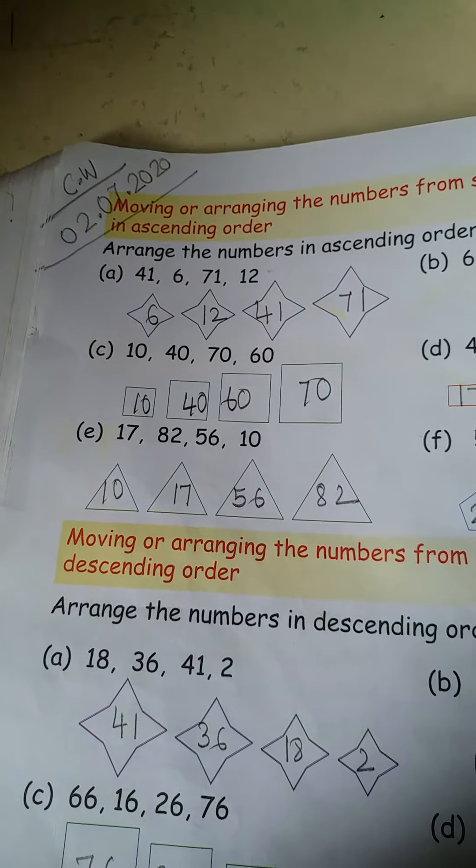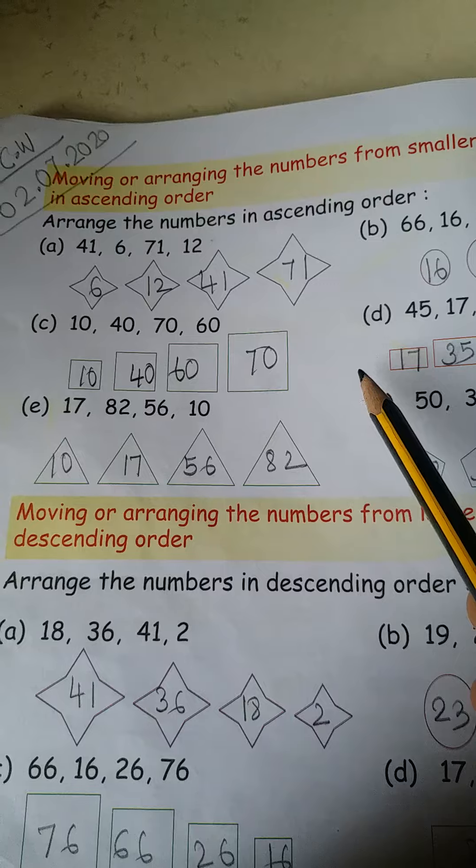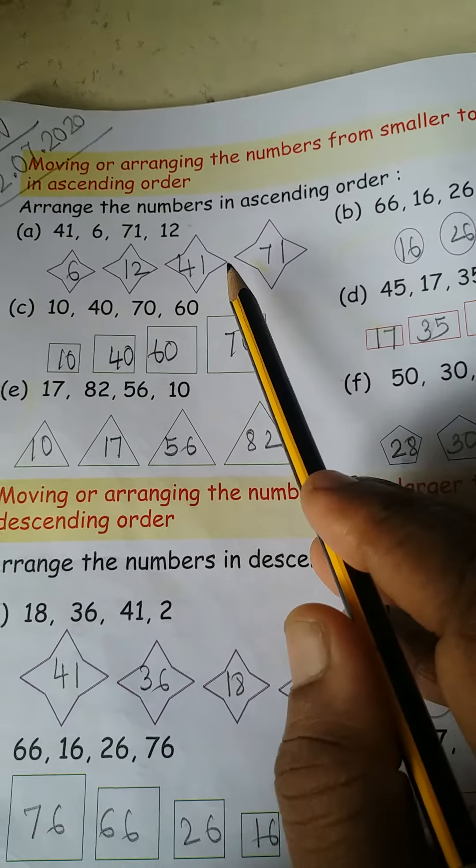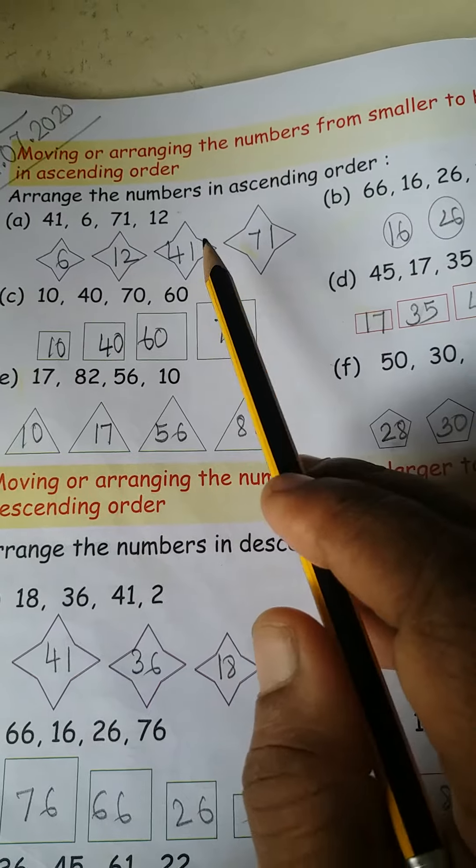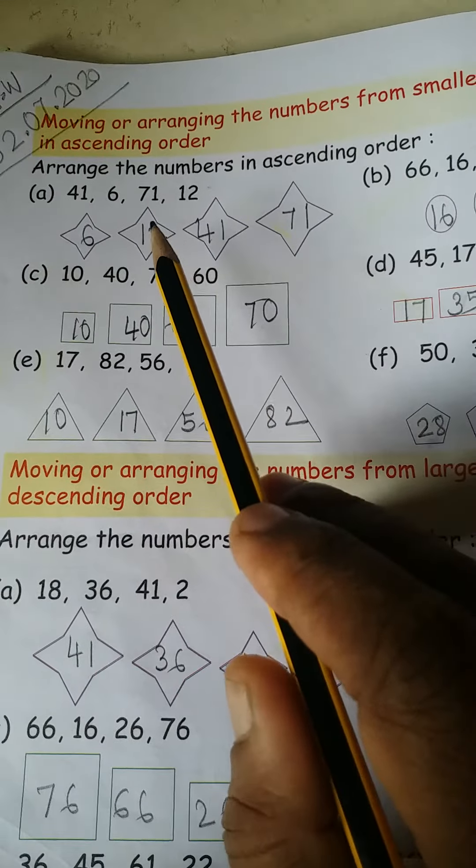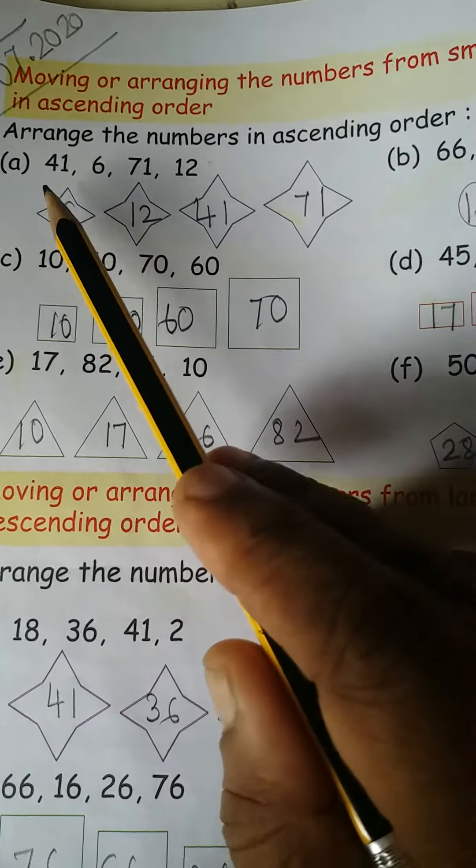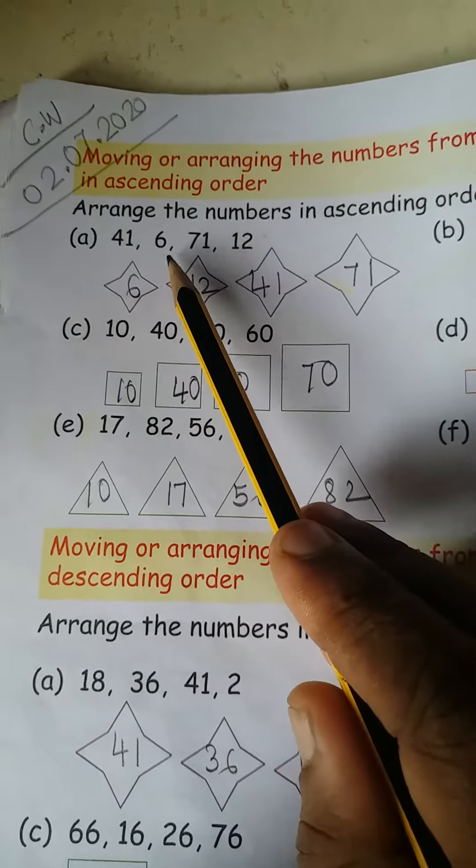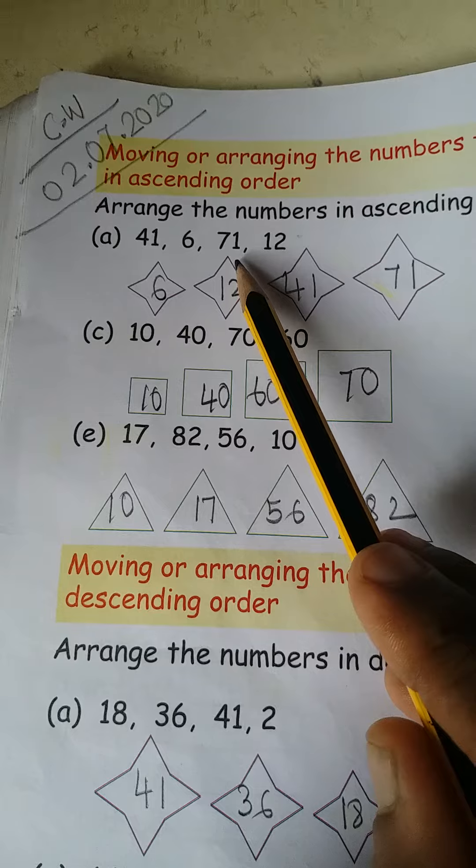Do you know what is called ascending order? Means we have to arrange these numbers in smaller to bigger. Means small to big. Understood? Now let's start. Number A. What is written here? 41, 6, 71, 12.